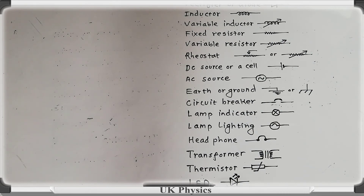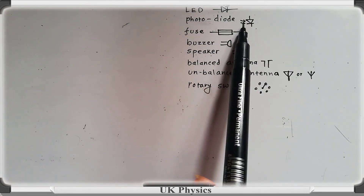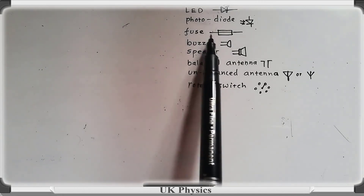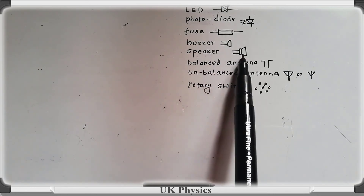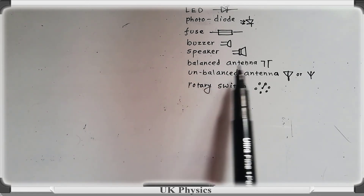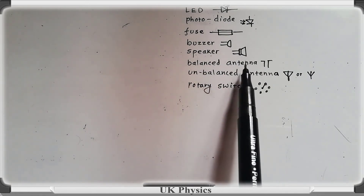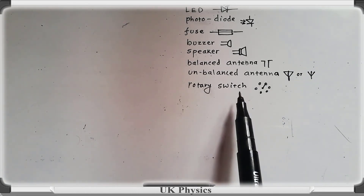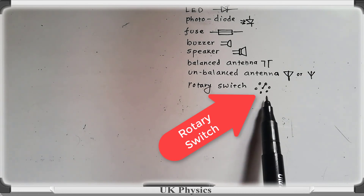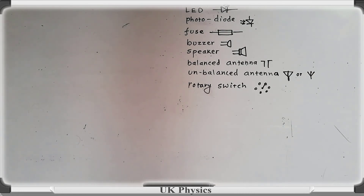This one is a light-emitting diode. This is the circuit symbol of a photodiode. This is the circuit symbol of a fuse. This is the circuit symbol of a buzzer. This is the circuit symbol of a speaker. This is the circuit symbol of a balanced antenna, and this is the circuit symbol of an unbalanced antenna. Please pause the video and make a note. Don't forget to subscribe to this channel. UK Physics — thanks for watching.